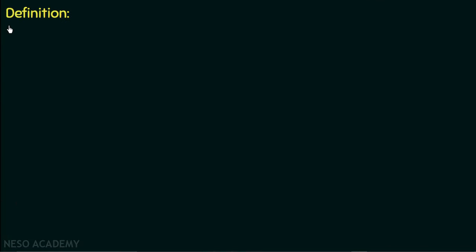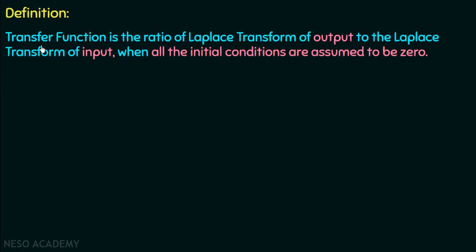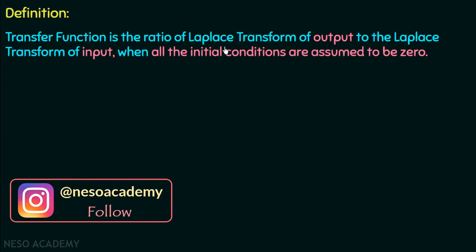The transfer function is an important parameter of an LTI system. Like impulse response, we use the transfer function to define the LTI system. The transfer function is the ratio of the Laplace transform of output to the Laplace transform of input when all the initial conditions are assumed to be zero. This point — all the initial conditions are assumed to be zero — is a very important point. We cannot define the transfer function without assuming the initial conditions to be zero.